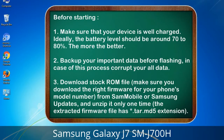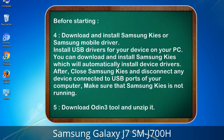Before starting: 1. Make sure that your device is well charged — ideally the battery level should be around 70-80%, the more the better. 2. Back up your important data before flashing, in case this process corrupts your data. 3. Download the stock ROM file. Make sure you download the right firmware for your phone's model number, from Sammobile or Samsung updates, and unzip it only one time. The extracted firmware file has a *.tar.md5 extension.